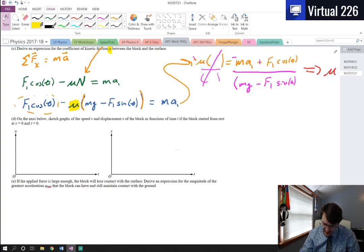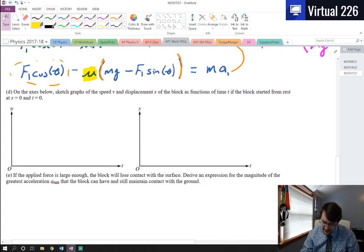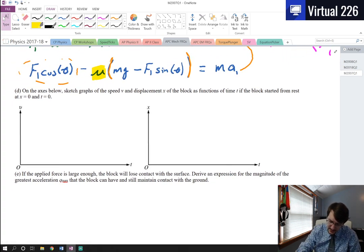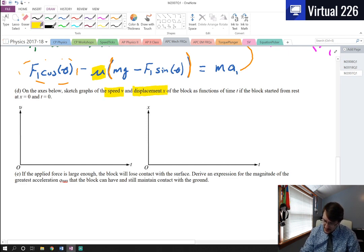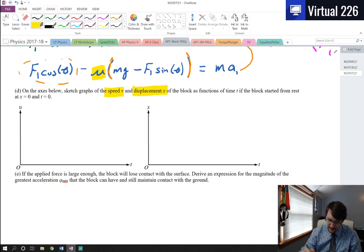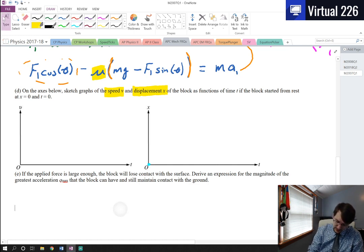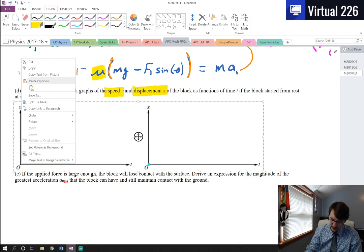In part D on the axis below, we're trying to sketch the graphs of the speed and the displacement of the block as a function of time if the block started from rest at x equals zero and at t equals zero. So because our block started at rest and it also started at x equals zero, for our displacement graph, we can start this at zero, zero. And since it started at rest at time equals zero, our initial speed can be zero as well.